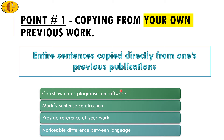Even if it is your own work, the plagiarism detection software doesn't know that, so it will flag your new work and you may have to give an explanation. A small modification in sentence construction will ease the process. If modification is not possible, you should at least provide a reference to your previous work — for example, stating that the experimental details are similar to reference number three — so that the reviewer will know it is your own work.